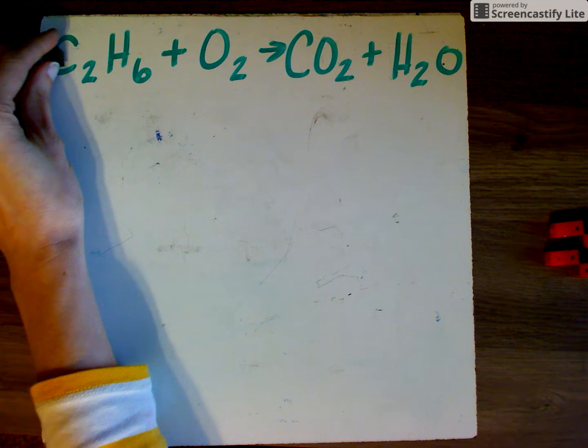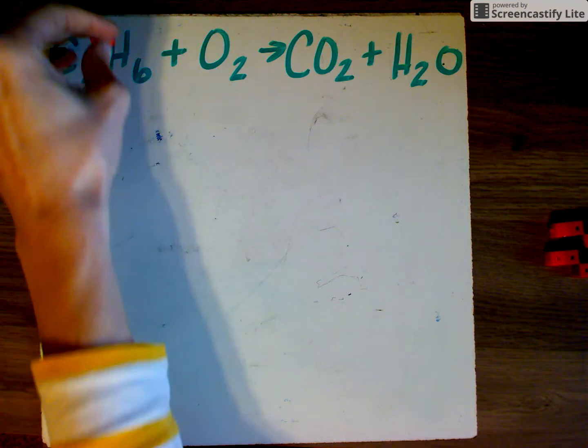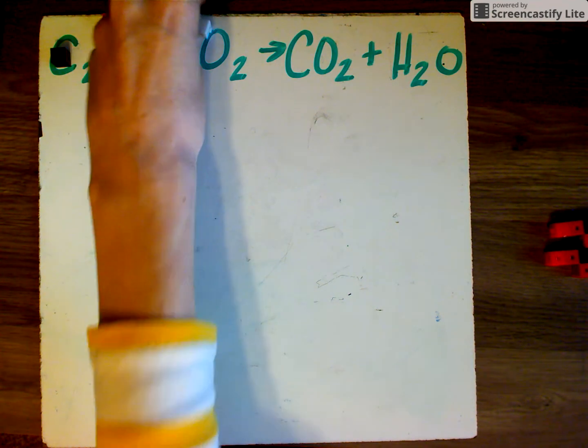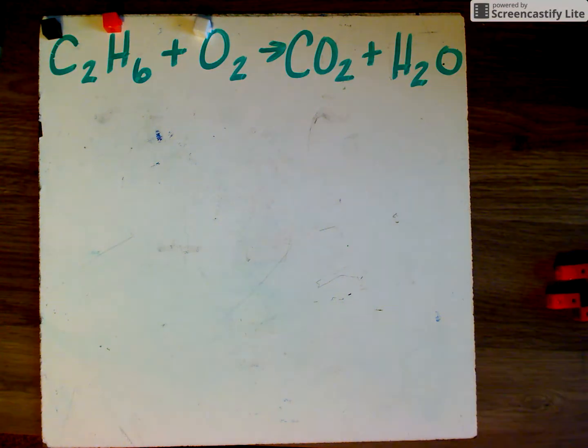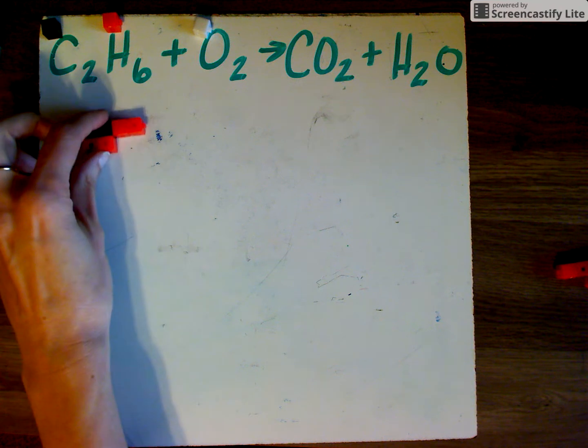In this case, carbon is going to be represented by black. Hydrogen is going to be represented by red. Oxygen is going to be represented by white. So we're going to have three different colors that we're going to be dealing with. When we're working through this, we're going to make sure that we're keeping things consistent. Let's model what's here.